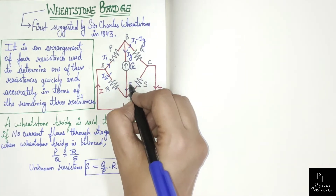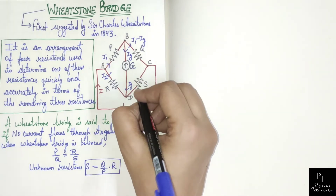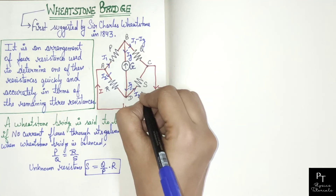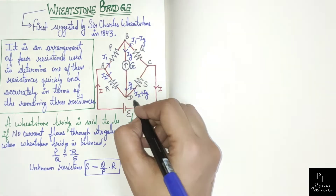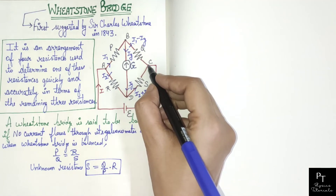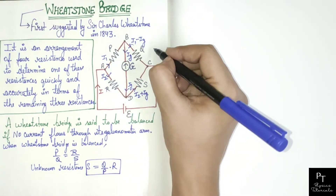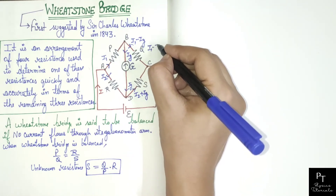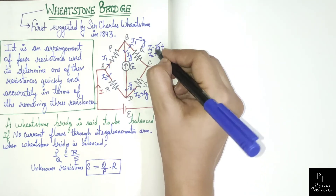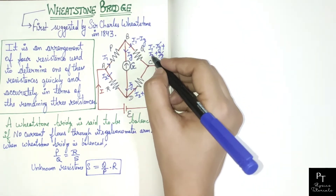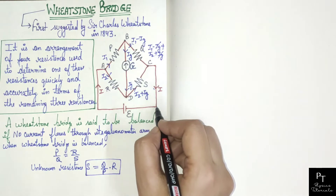So the current in one branch becomes I1 minus IG, and in another branch it becomes I2 plus IG. At junction C, we have I1 minus IG plus I2 plus IG, and the IG terms cancel, giving I1 plus I2, which equals the original current I entering at junction A.